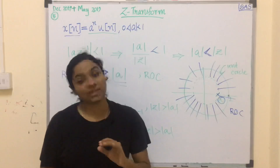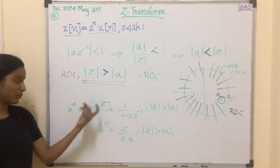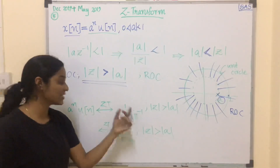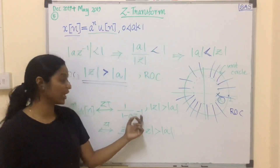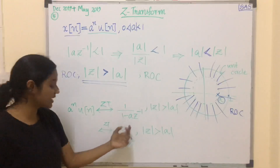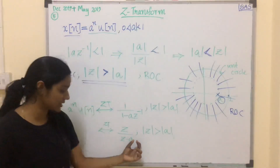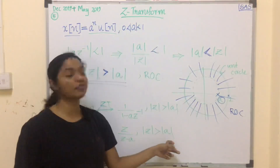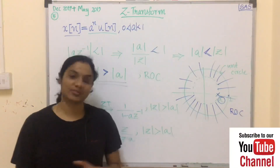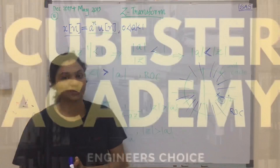At the same time, we have obtained the Z transform of a^n · u(n) as 1/(1 − a·z^(−1)), or equivalently z/(z − a), with an ROC of |z| > |a|. We will see more in the next lecture. Thank you.